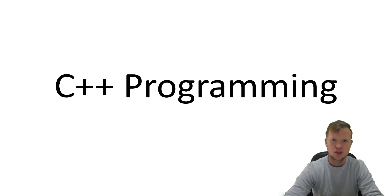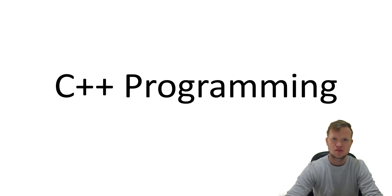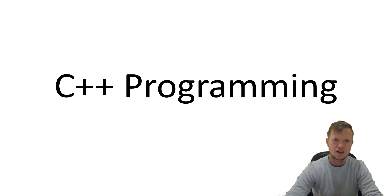A local variable is declared inside a function and it's only accessible to that specific function it was declared in. Now by using the Unary Scope Resolution Operator, we can declare a variable with the same name in the global and in the local sense.